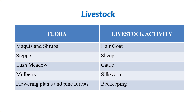Flowering plants and pine forests — livestock activity: beekeeping. Beekeeping thrives in areas with flowering plants and pine forests, as these environments provide a rich source of nectar for bees, supporting honey production.